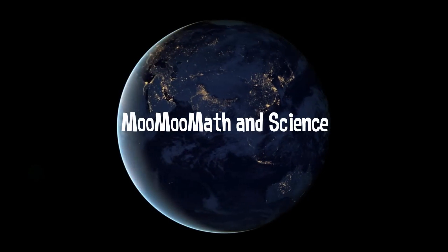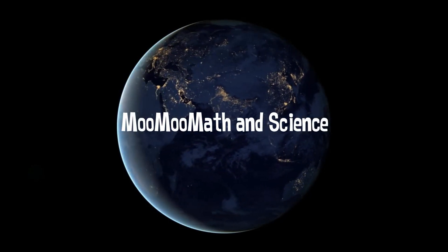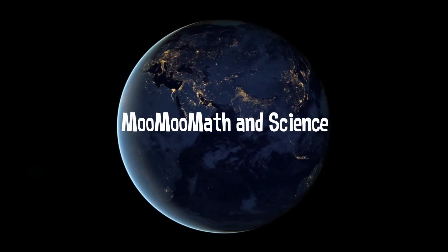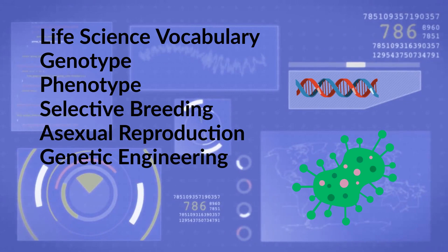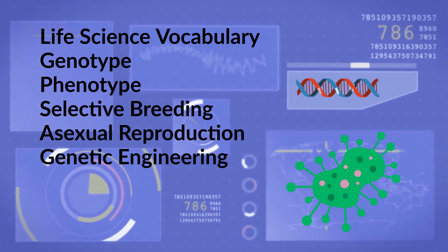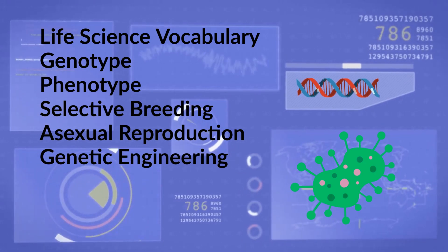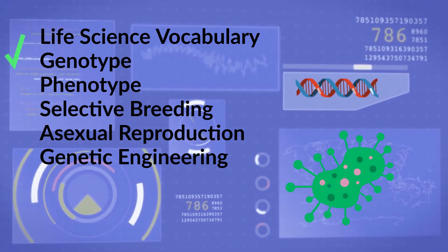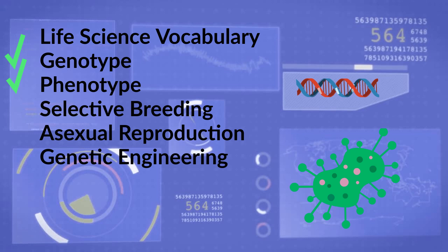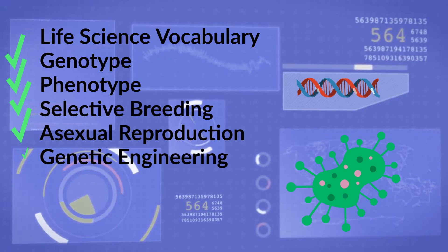Welcome to Moo Moo Math and Science. In this video we will cover some life science vocabulary: genotype, phenotype, selective breeding, asexual reproduction, and genetic engineering.